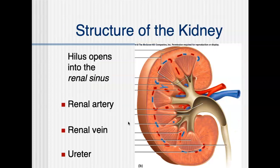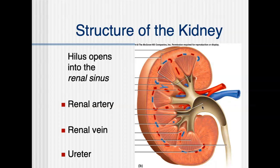Looking at the structure of the kidney, we have a structure called the hilus, which opens into the renal sinus. The sinus is that concave dip at the center — I could put a forceps down into that hollow region. Feeding into the renal sinus are three tubes: the renal artery, the renal vein, and the ureter.